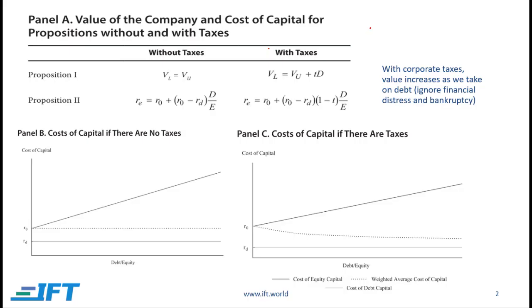The first learning outcome of this reading has to do with Modigliani and Miller propositions related to capital structure. We will consider two scenarios: one without taxes and the other with taxes. For each scenario we have two propositions. Proposition 1 deals with the value of a firm and Proposition 2 deals with the cost of equity.